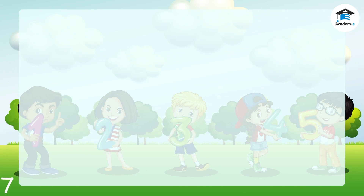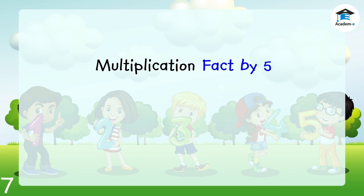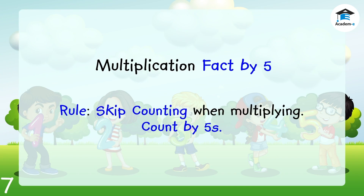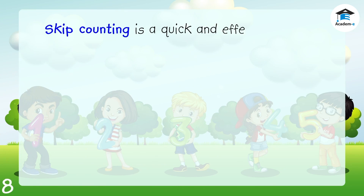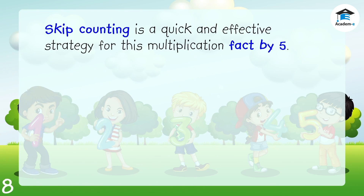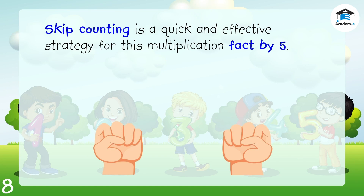Now we move on to the multiplication fact by 5. The rule for multiplication fact by 5 is to use skip counting when multiplying. Let's count by fives. Skip counting is a quick and effective strategy for this multiplication fact by 5, because skip counting by 5 is the easiest to do. Let's try skip counting by 5.